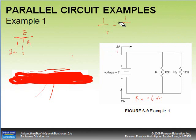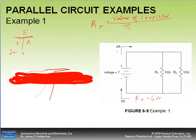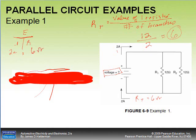The easiest method: if all resistors are the same in each branch, take the value of one resistor and divide by the number of branches. We've got 12 ohms and 2 branches, giving us 6 ohms. Now back to voltage: total amperage times total resistance equals total voltage — 2 × 6 = 12 volts.